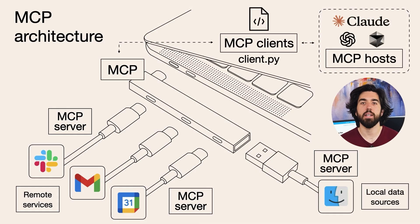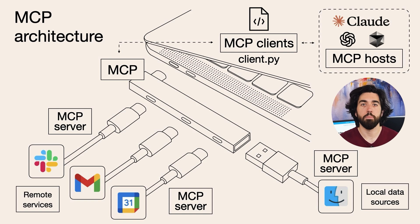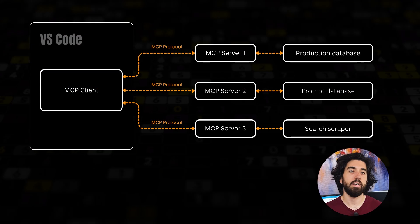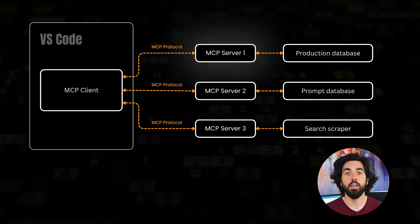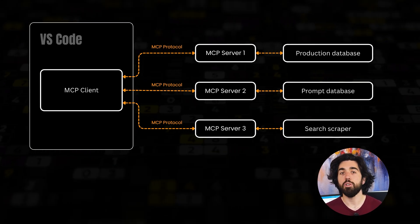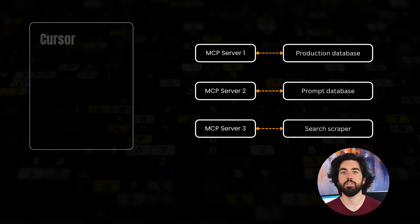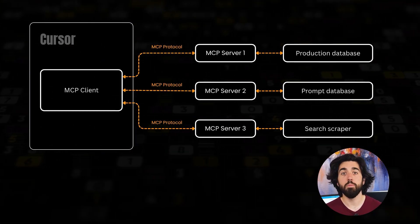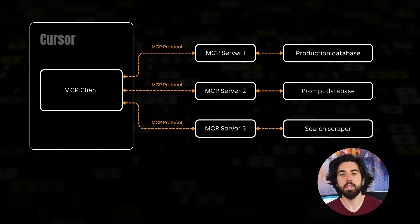The best analogy to explain it is USB. Nobody invents a fresh cable and port for every gadget — except Apple. You slide the stick into the port, and the OS figures it out. MCP aims to be the USB for model context. Your MCP servers live outside the editor itself, so if you bounce from VS Code to Cursor, the new editor pings the same server URL on startup, and your full toolbox is already there.